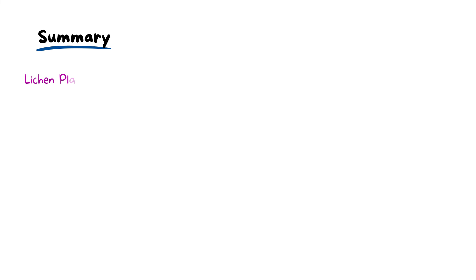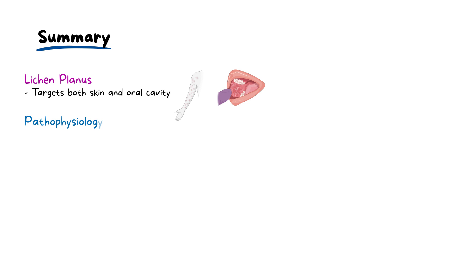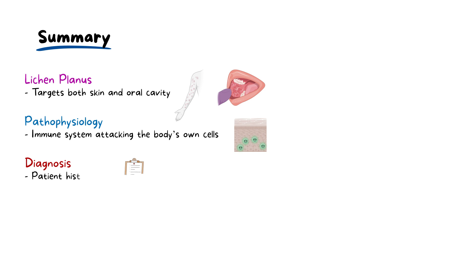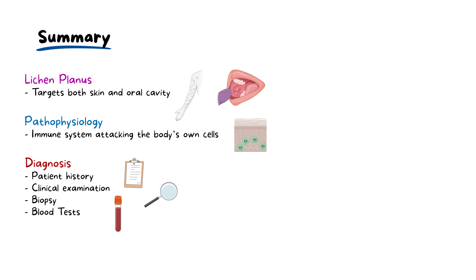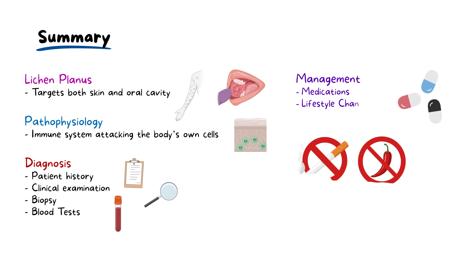To summarize, lichen planus is a complex autoimmune inflammatory condition that often targets both the skin and the oral cavity. Its pathophysiology involves the activation of the immune system, particularly T lymphocytes that mistakenly attack the body's own cells — the keratinocytes. Diagnosis usually involves a thorough patient history and detailed clinical examination, with additional tests supplementing when required. While no definitive cure exists, effective management is attainable through non-surgical treatments, including medications and lifestyle adjustments, with surgical interventions reserved for more severe cases.